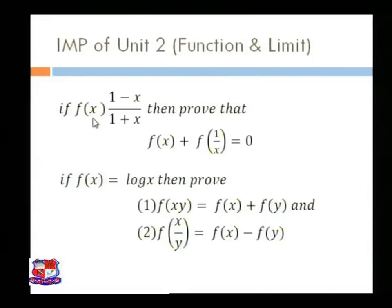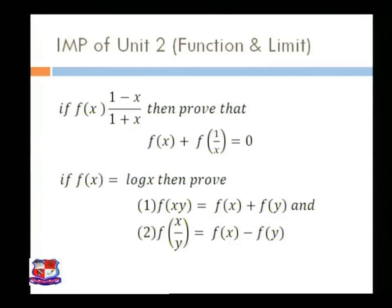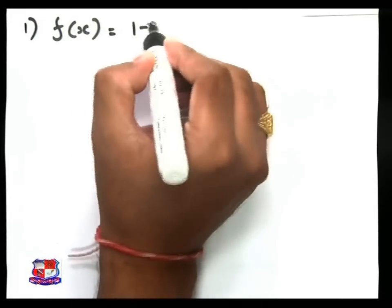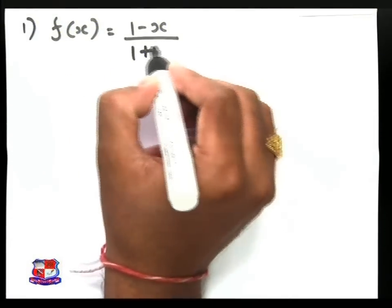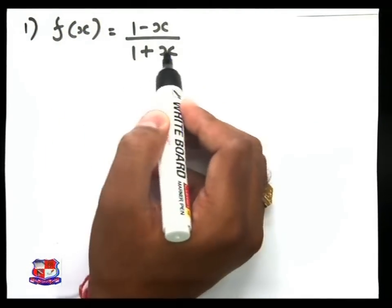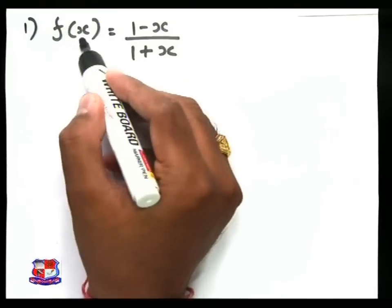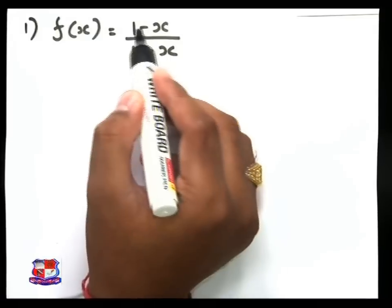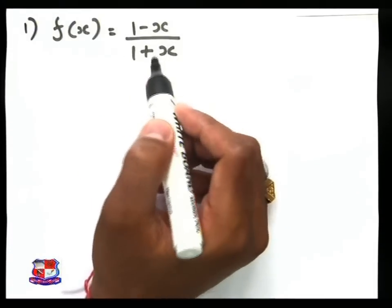We now move to the next question. First, if f of x is equal to 1 minus x upon 1 plus x, then prove that f of x plus f of 1 upon x is equal to 0. Our function is f of x equal to 1 minus x upon 1 plus x. Suppose f of 1 equals 1 minus 1 upon 1 plus 1, and f of 2 equals 1 minus 2 upon 1 plus 2.